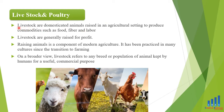Third component is livestock and poultry farming. Livestock are basically animals raised in an agriculture setting to produce commodities such as food, fiber and labor. Livestock are generally raised for profit. Raising animals is a component of modern agriculture and has been practiced in many cultures since the transition to farming. On a broader view, livestock refers to any breed or population of animals kept by humans for a useful commercial purpose.